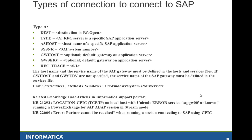These KBs relate to certain changes you need to make in your ETC hosts and the Windows\System32\drivers\etc files. SAP requires some entries to be added in the services file. For Unix, you will find it under /etc/services; for Windows, under Windows\System32\drivers\etc\services. Refer to the mentioned KBs and add all the required entries.